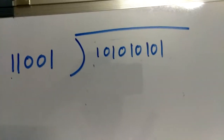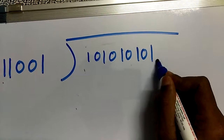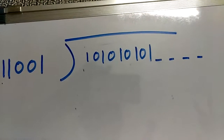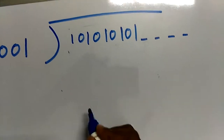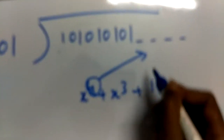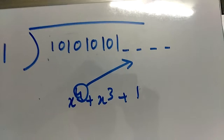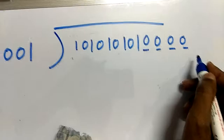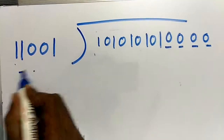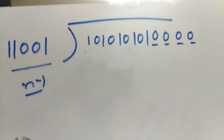The remainder of the polynomial division is our actual CRC. Before the calculation, we need to append extra initial bits to the data. The number of extra bits depends on the highest degree of the polynomial. Since our polynomial has highest degree 4, we append four zeros as initial values — that is, n-minus-1 bits appended to the data word.